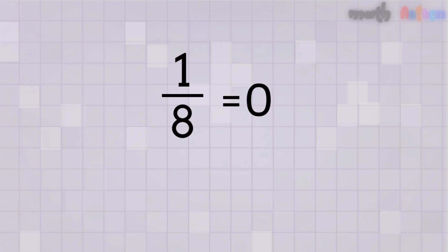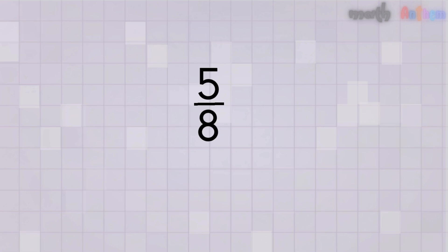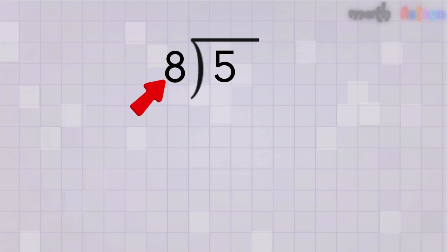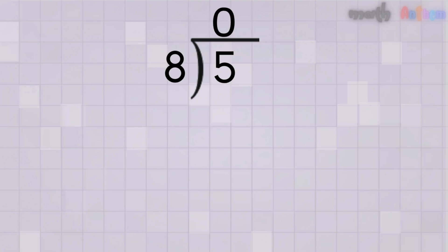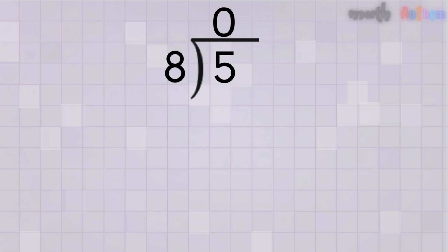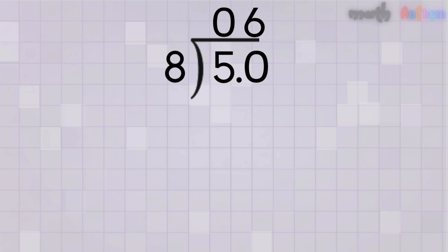Now let's convert 5-eighths into a decimal. We start with our trusty division symbol — place the 8 outside and the 5 inside. How many times does 8 go into 5? Well, 8 is bigger than 5 so it doesn't go in yet. We write our first 0 since the number doesn't fit. This is where the decimal point comes to the rescue — we place a decimal point right after the 5 and add a 0 after it, making it 5.0. How many times does 8 go into 50? That's 6 times, because 8 times 6 equals 48. We write 6 in the quotient right after the decimal point.